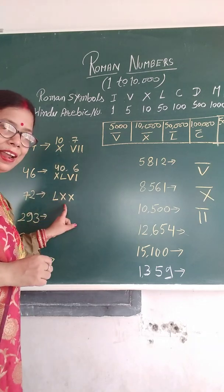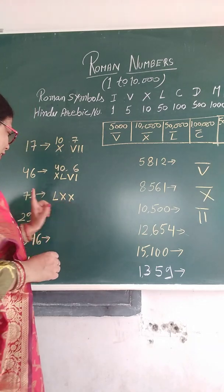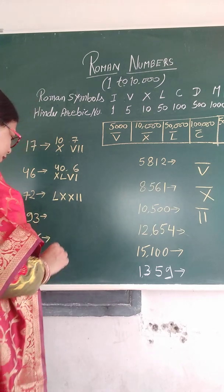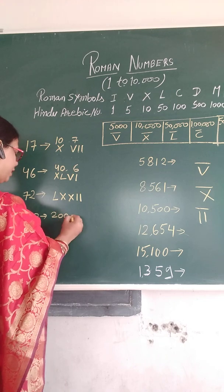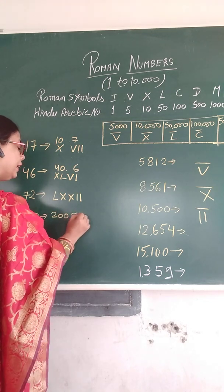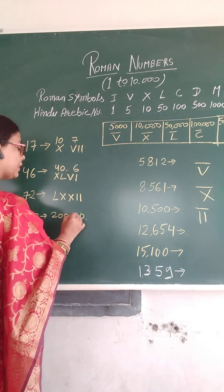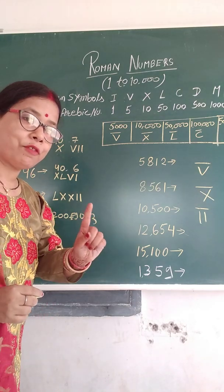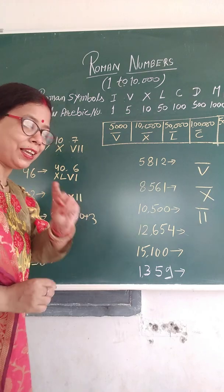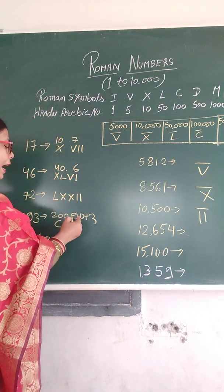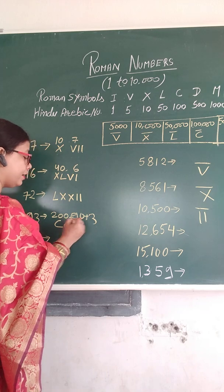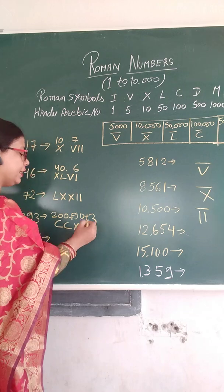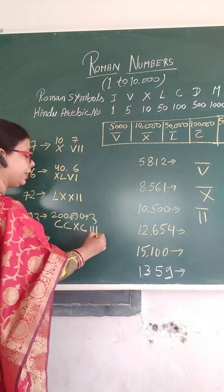72: L for 50, X, X — that's 70, and 2 lines, II. So LXXII. For 293: that's 200 plus 90 plus 3. 2 C's for 200, then XC for 90 (100 minus 10), and 3 I's — CCXCIII.